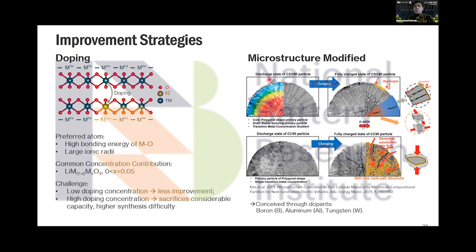Microstructure modification is another strategy. From co-precipitation we typically obtain a standard morphology, but if doped with appropriate atoms such as boron, aluminum, or tungsten, a modified microstructure is achieved that is more resistant to electrolyte attack and other degradation mechanisms.